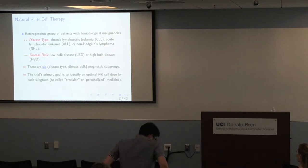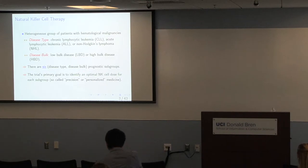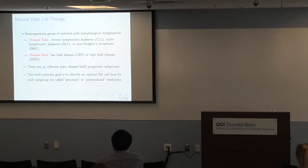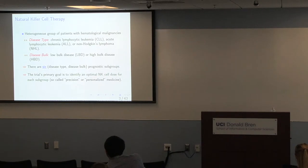I think high bulk is more advanced disease. Based on our collaborators' input, we believe we have different optimal doses for these six prognostic subgroups. We want to identify the optimal NK cell dose for each subgroup, which could be called precision medicine or personalized medicine.